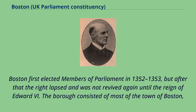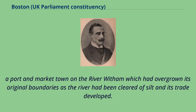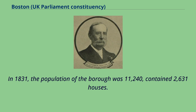The borough consisted of most of the town of Boston, a port and market town on the River Witham, which had overgrown its original boundaries as the river had been cleared of silt and its trade developed. In 1831, the population of the borough was 11,240, contained in 2,631 houses.